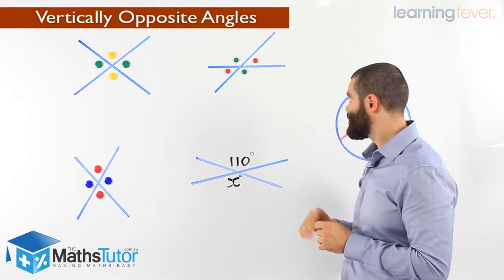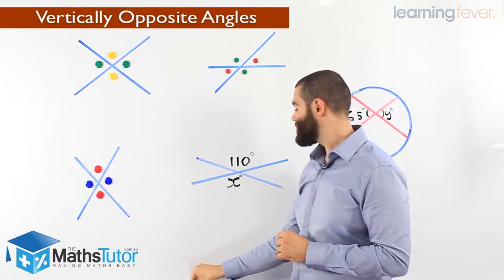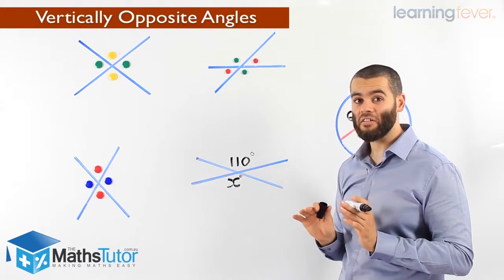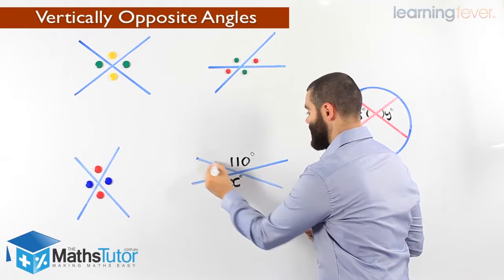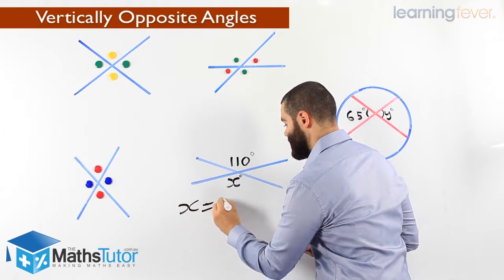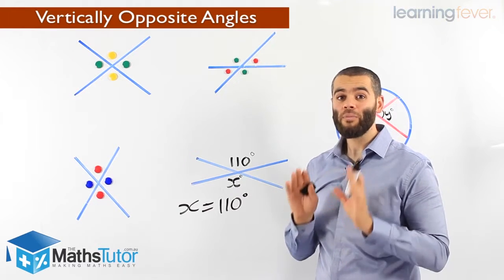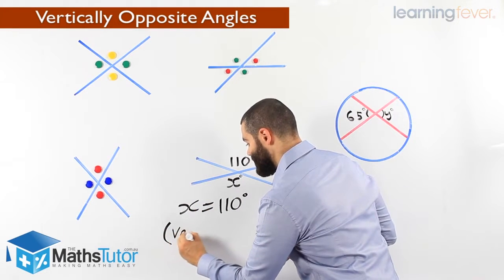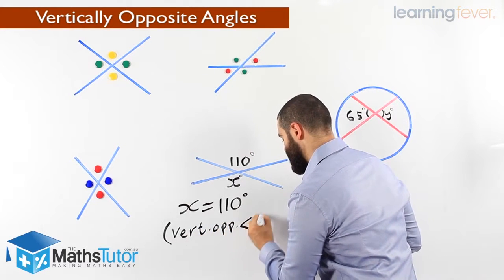We mentioned that they are equal in size. So looking at this example, that concept is going to help us. X equals 110 degrees. Why? Because they are vertically opposite. This angle here is opposite to that angle there. So we say X equals 110 degrees. That's the answer. But we remember, we must give a reason. We have to give our reason. Our reason is: vertically opposite angles.